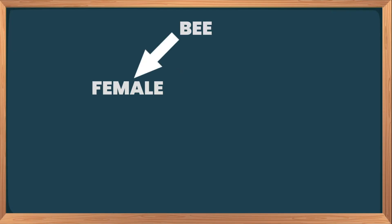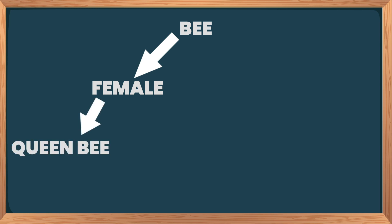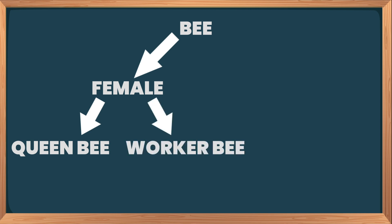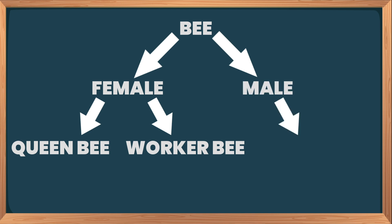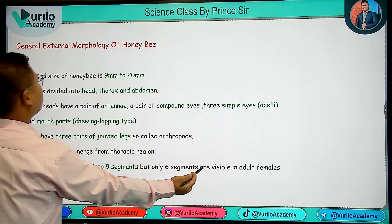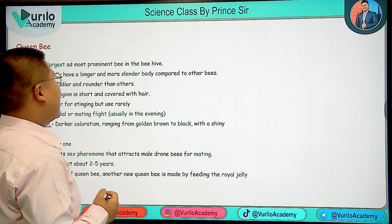There are two types of females: the Queen Bee and the Worker Bee. The male is the Drone Bee. To remember: female is Queen Bee or Worker Bee, and male is Drone Bee.